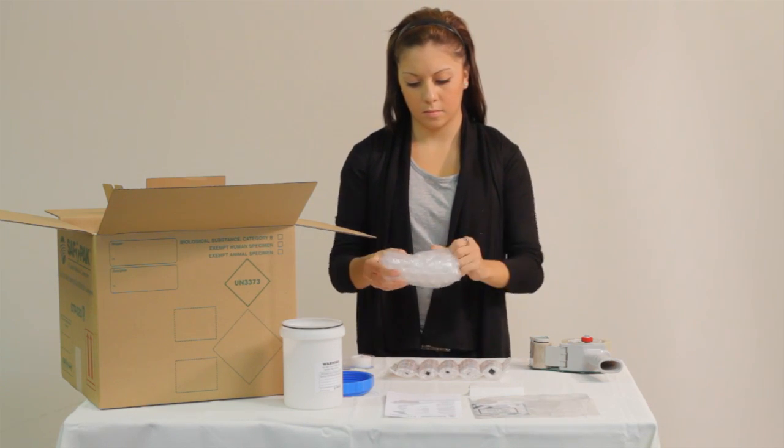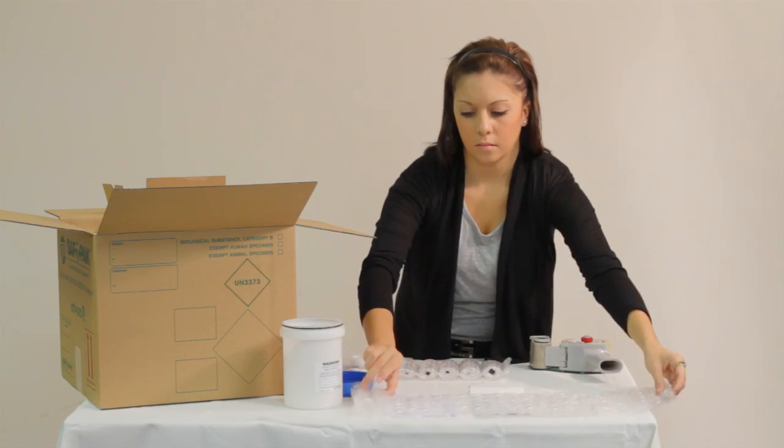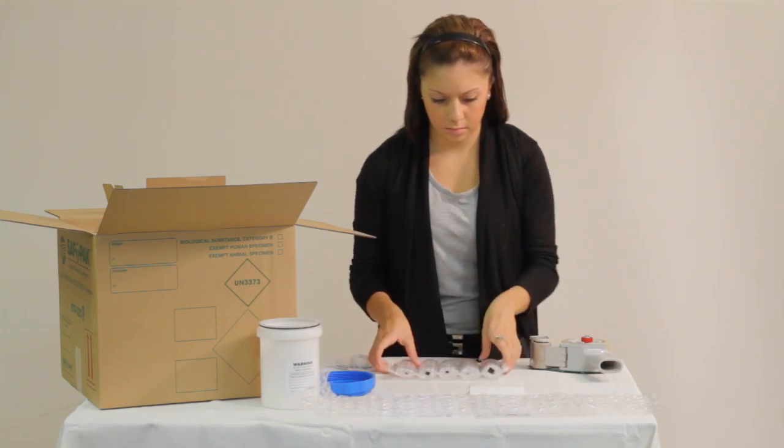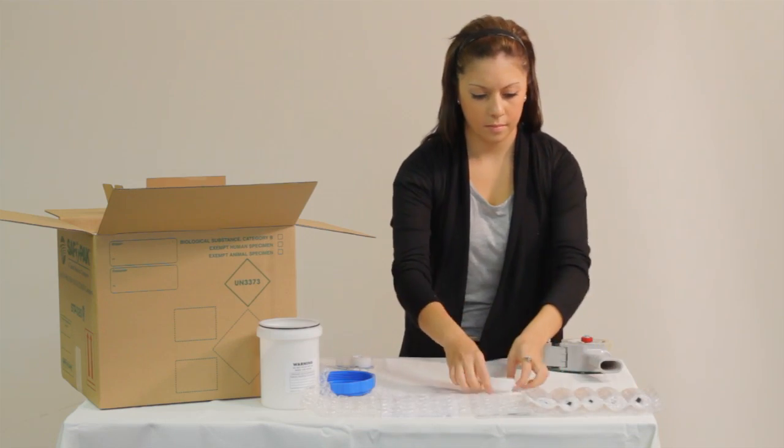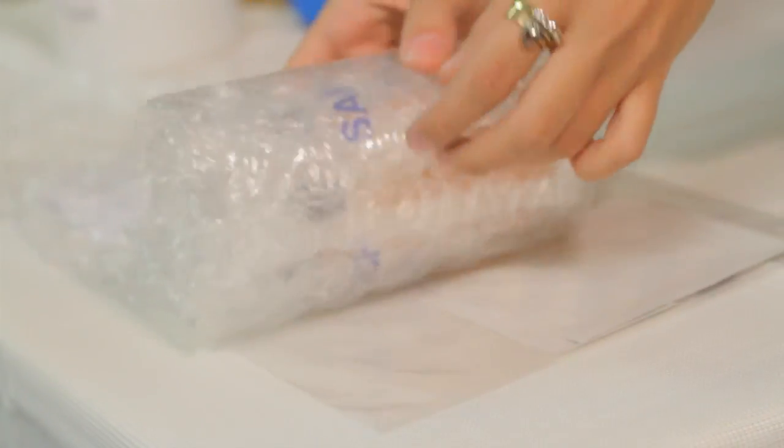If you are shipping multiple primary containers, make sure that fragile containers are separated. Place all primary containers, sufficient absorbent and cushioning, inside the secondary packaging.